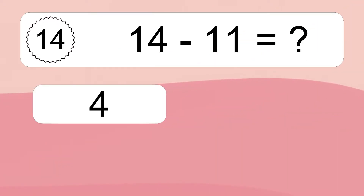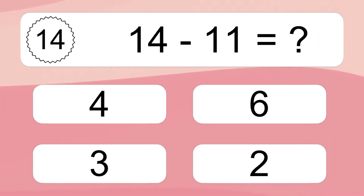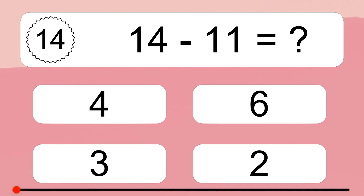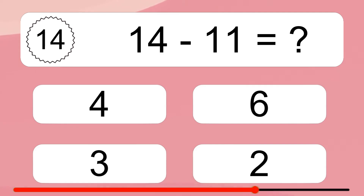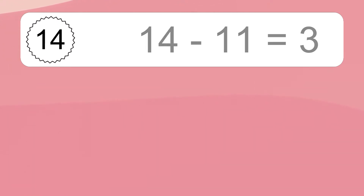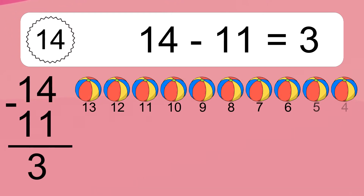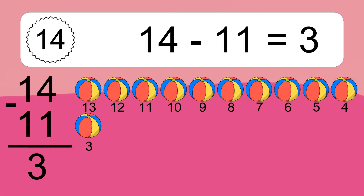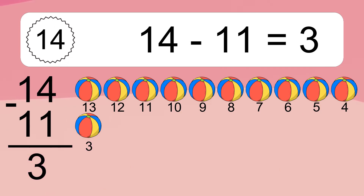14 minus 11 equals what? 14 minus 11 equals 3. Let's count it: 13, 12, 11, 10, 9, 8, 7, 6, 5, 4, 3.